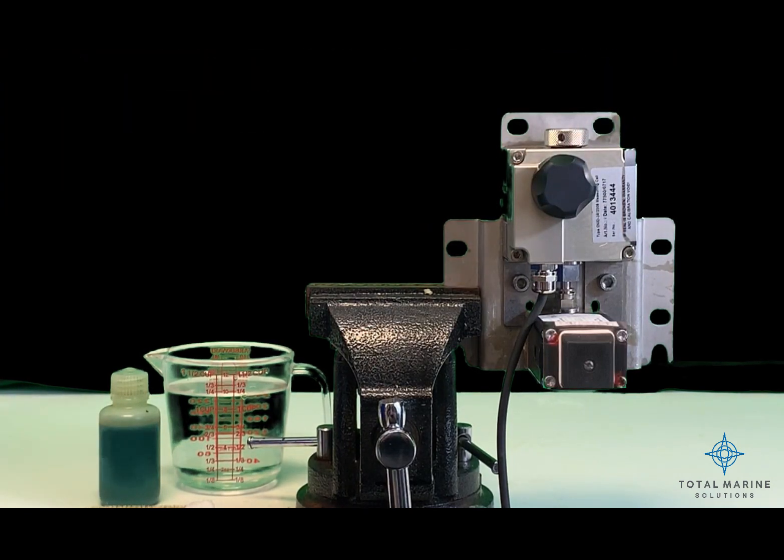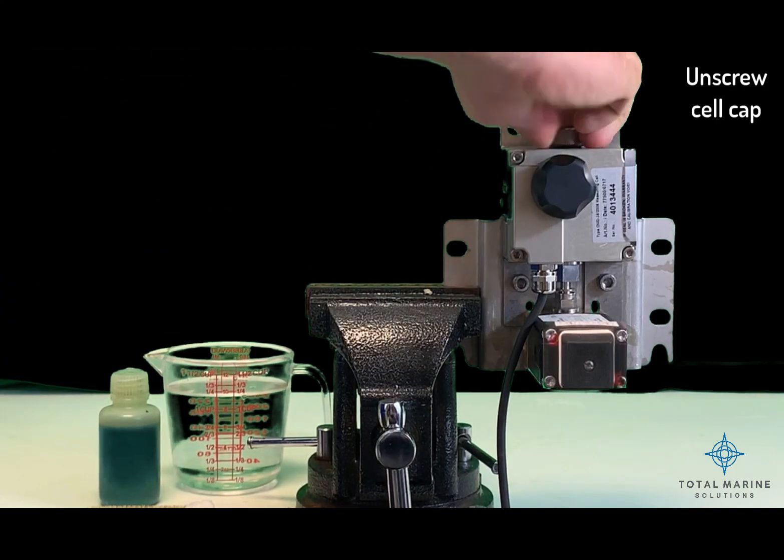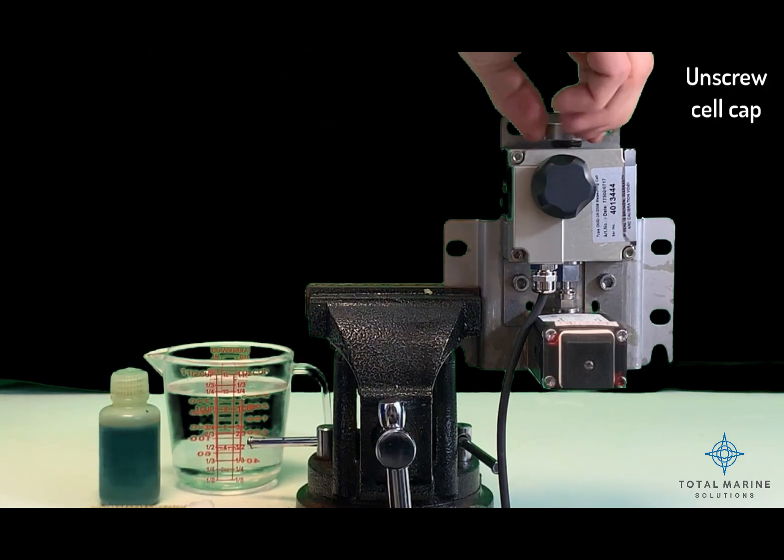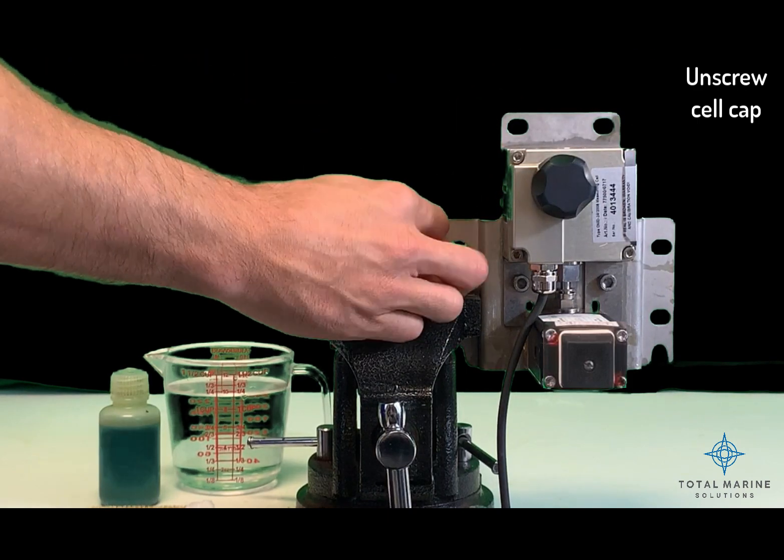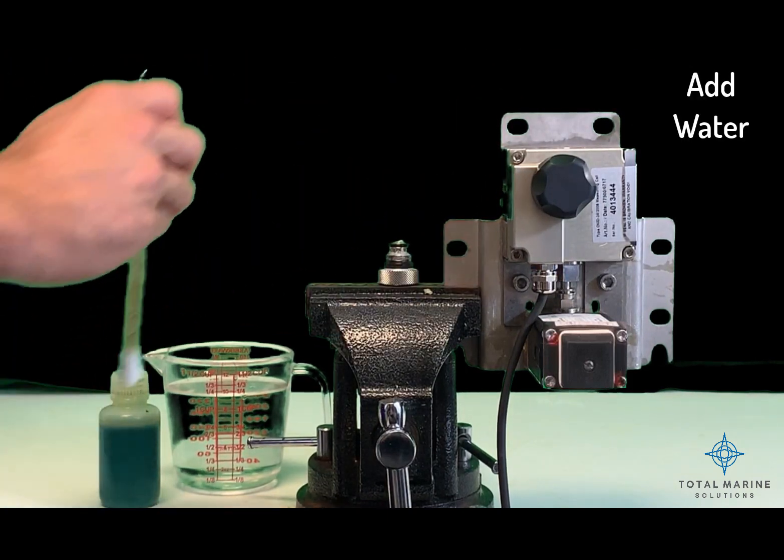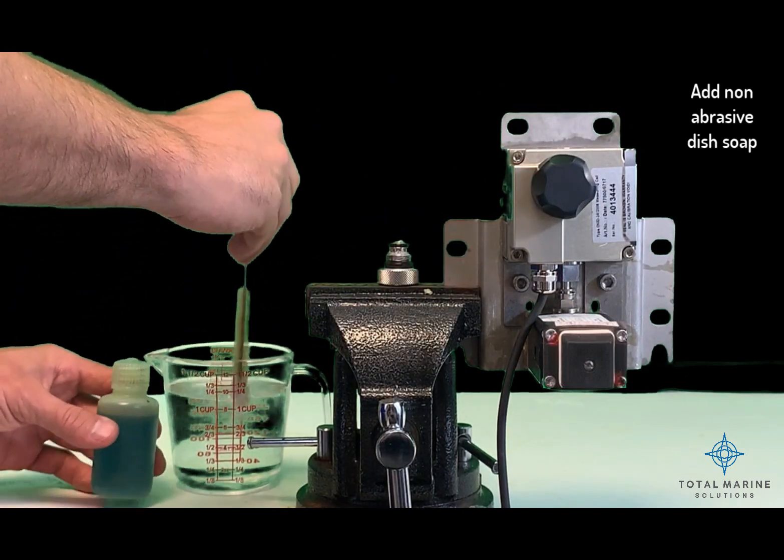If a more intense cleaning is needed, remove the cell cap. Use some water to wet the cell cleaning brush and add a drop of non-abrasive soap.